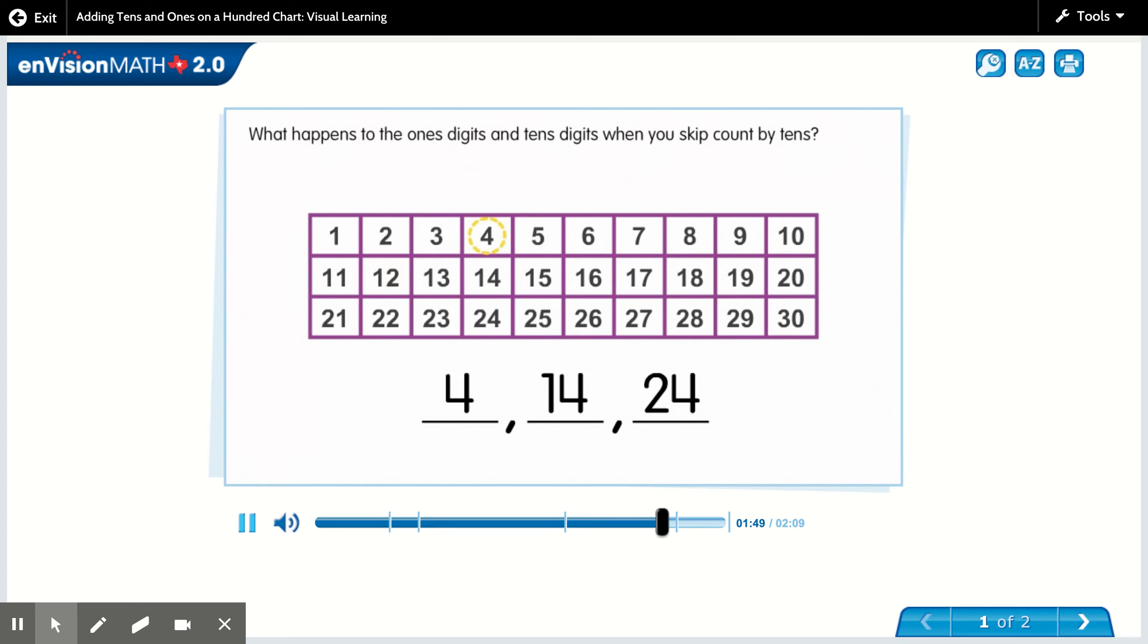What happens to the ones digits and tens digits when you skip count by tens? The ones digits stay the same and the tens digits get larger.